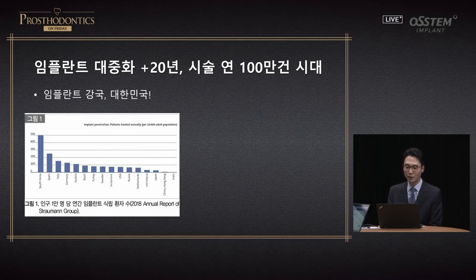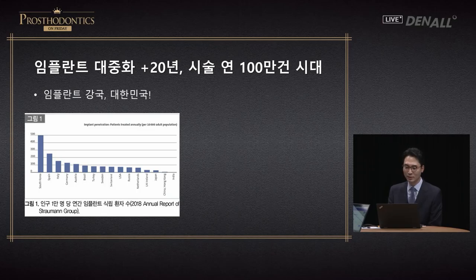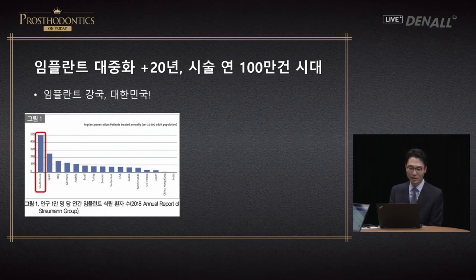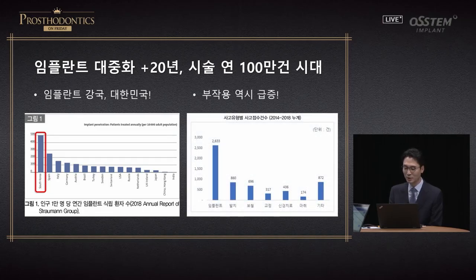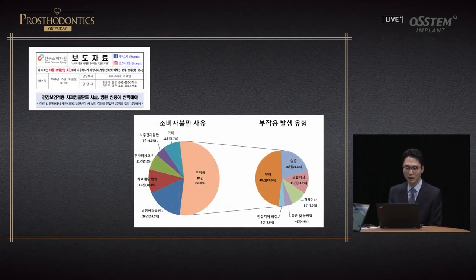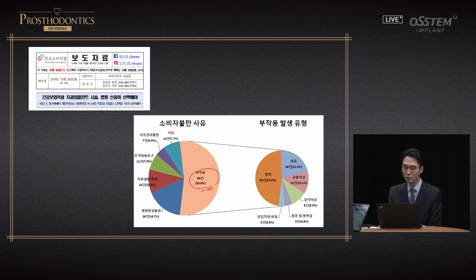Since the 2000s, implant treatment has become more widespread. By 2022, implant treatment numbers will exceed 1 million cases annually. In Korea, the number of patients who have received implant treatment per population of 10,000 compared with other advanced nations is the highest in the world. With increased implant treatment, the number of side effects has also increased. According to the Korea Consumer Agency, the biggest complaints are related to complications, followed by the need to change dental clinics in the middle of treatment.